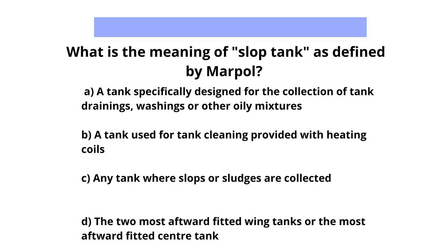What is the meaning of slop tank as defined by Marpol? A: A tank specifically designed for the collection of tank drainings, washings, or other oily mixtures. B: A tank used for tank cleaning provided with heating coils. C: Any tank where slops or sludges are collected. D: The two most aftward-fitted wing tanks or the most aftward-fitted centre tank.